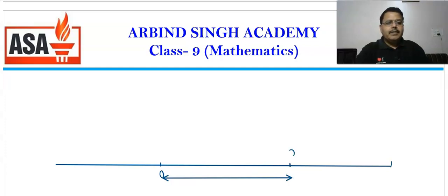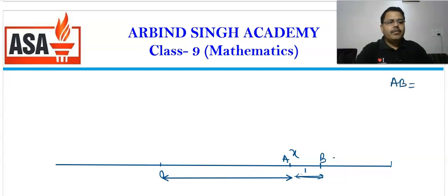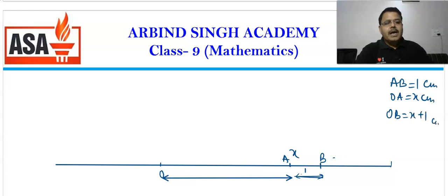Now what we have to do is measure 1 cm. So O to A is x, and AB is 1 unit (1 cm). OA is x cm. So O to B is x plus 1 cm.